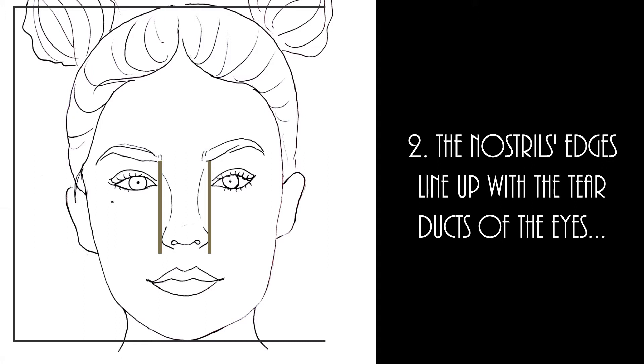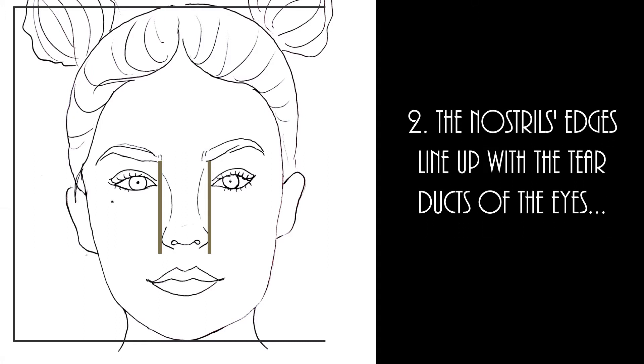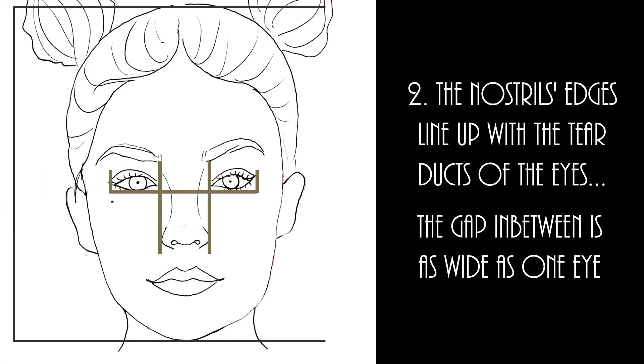This refers to the gap or distance between both eyes, which is as wide as one single eye. So basically there would fit another third eye in the space between both eyes.